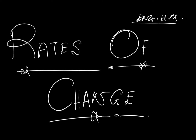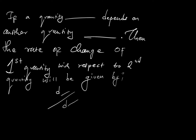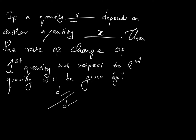When it comes to rates of change, what you need to understand is that if a quantity — let's say y — depends on another quantity, say x, then the rate of change of the first quantity with respect to the second quantity will be given by dy/dx.